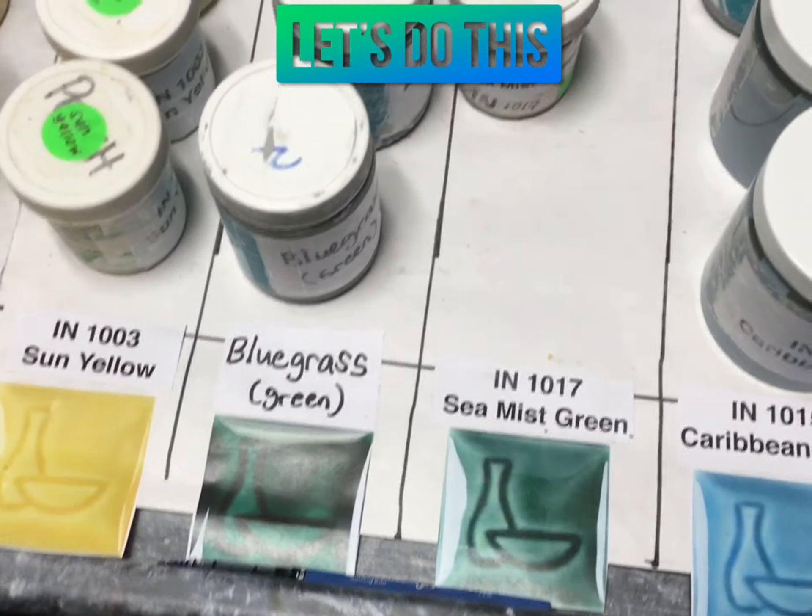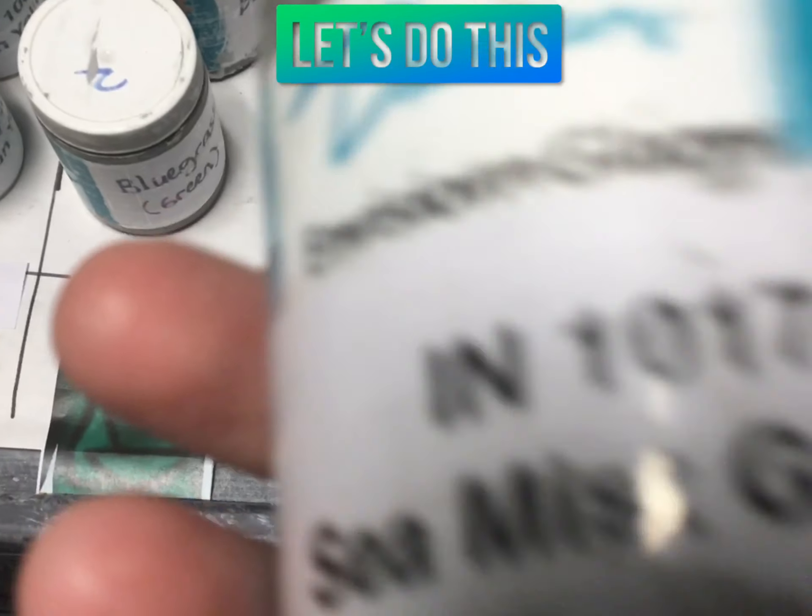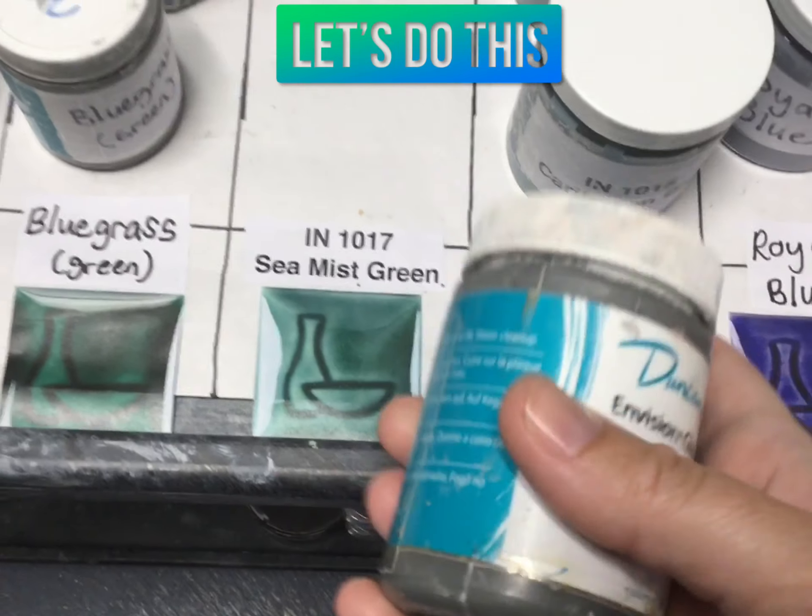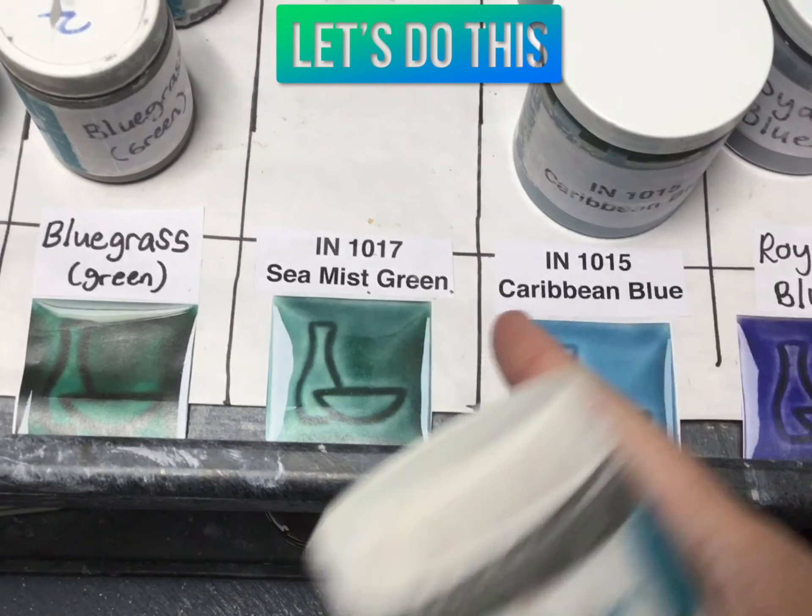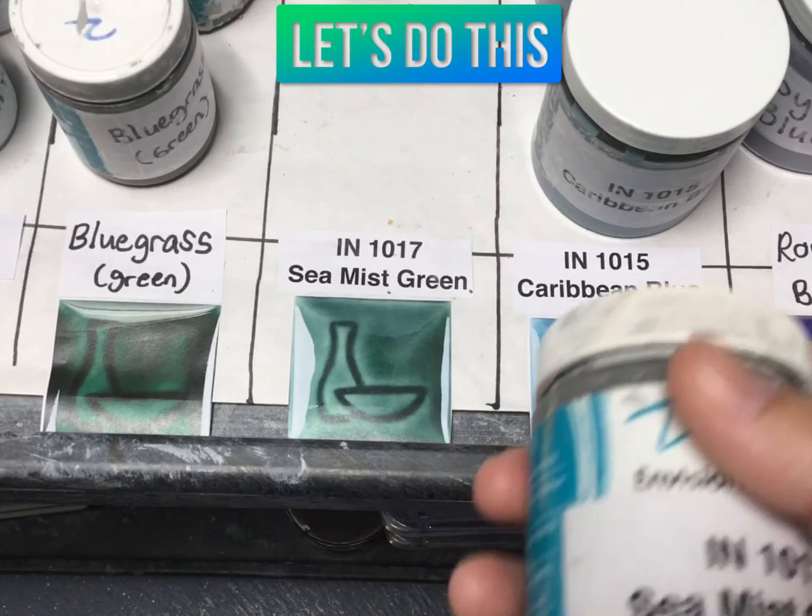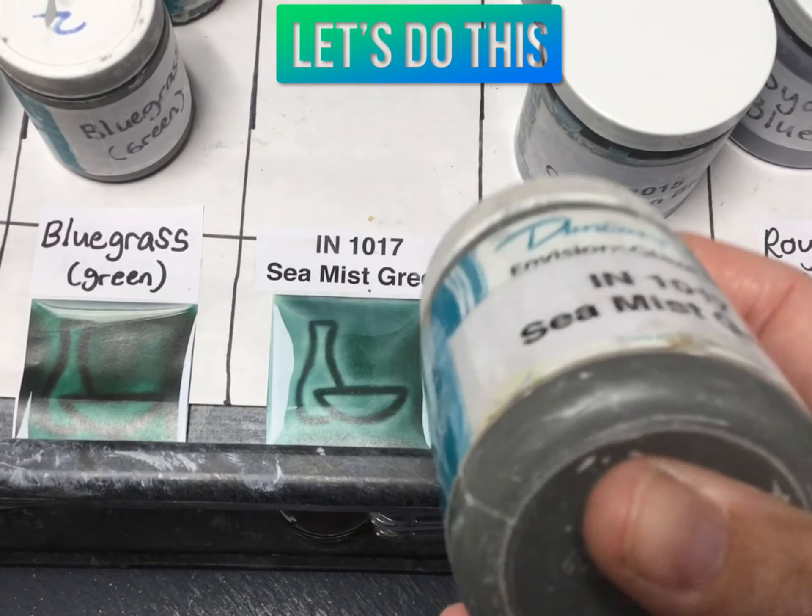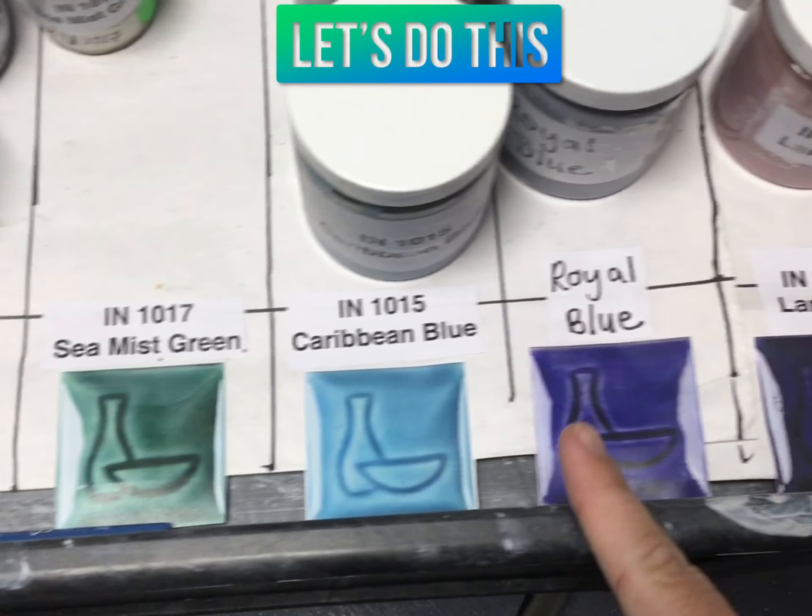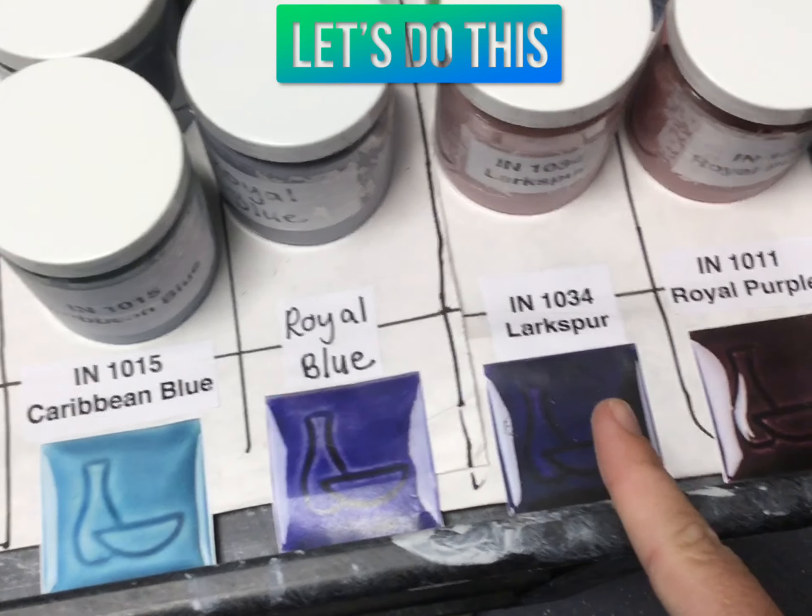So for example, Sea Mist Green? It looks gray, but this will actually fire to this really pretty light green color. So don't pay so much attention to what it looks like inside the bottle, but make sure that you're looking and choosing your glaze according to the picture.